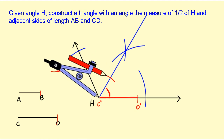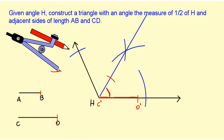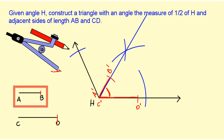And now I'm going to mark it off right here. That would be like saying this is point A prime and this is point B prime, and this segment right here has the length of AB.